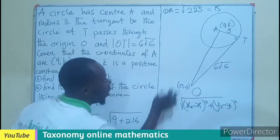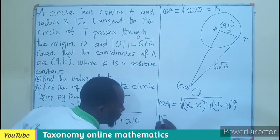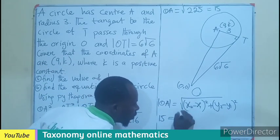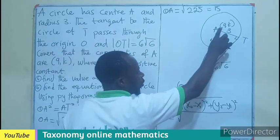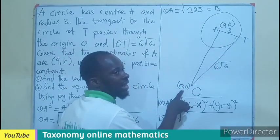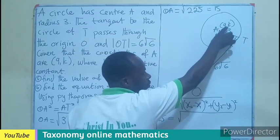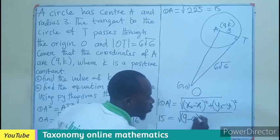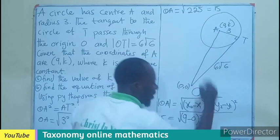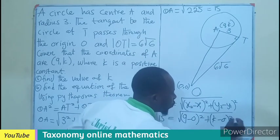So this is going to be OA, which is the same as 15. 15 is going to be equal to the square root of, let me take this to be my x1, then I'll go there and I'll show x2. So I'll be having 9 minus 0 squared, x1, x2, then I'll be having K minus 0 also squared.